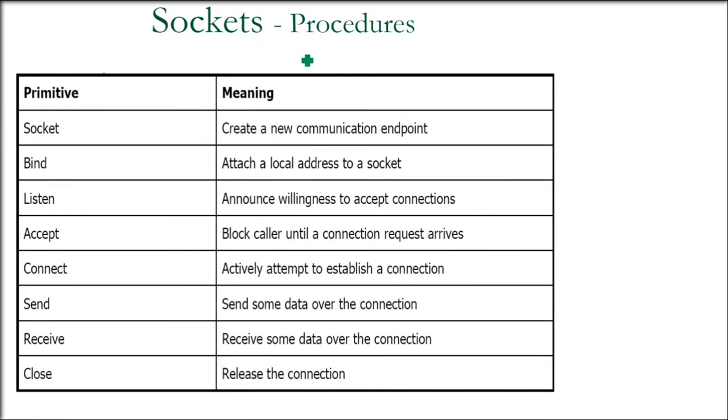So whenever you are using sockets, you ought to have certain procedures. We have certain procedures. What do you use for Windows or in Unix or Linux? Socket - this is a function. It creates a new communication endpoint. Bind means it attaches a local address to a socket. This is a binding socket. Then binding, listening means announcing willingness to accept connections. So server does that. It listens, it waits for the things to come. Accept means it is accepted now.